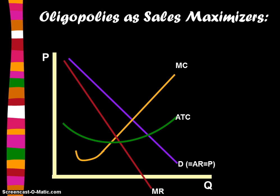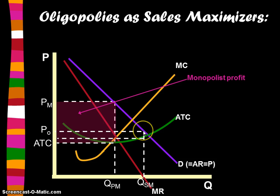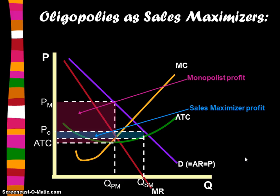On the graph, the profit-maximizing point of output is where MR equals MC, and that gives the profit-maximizing price. But if this oligopolist wanted to sales maximize, they produce at the quantity where MR equals zero, then reference the demand curve to find the price they would charge. The profits at the sales-maximizing level of output are much smaller than the profits at the profit-maximizing level of output.